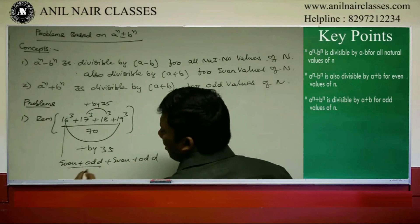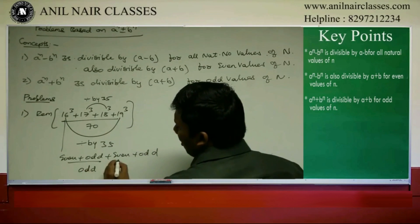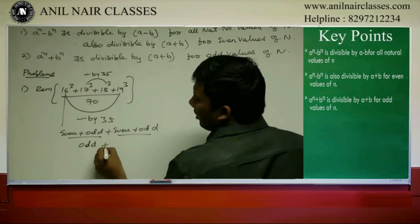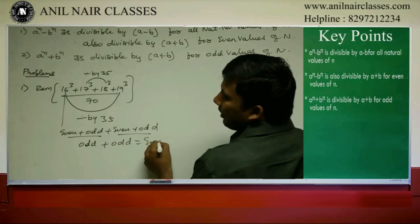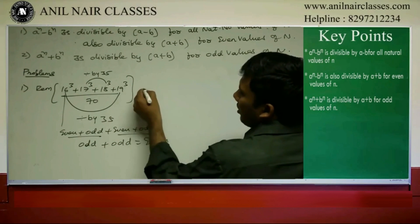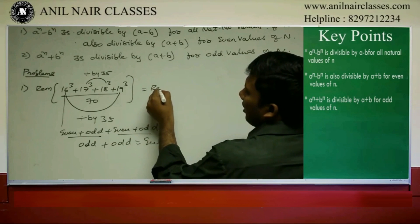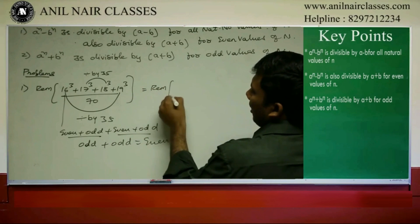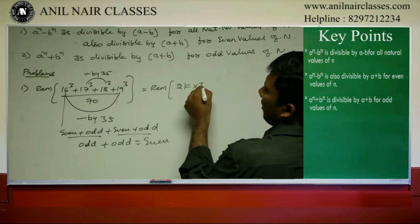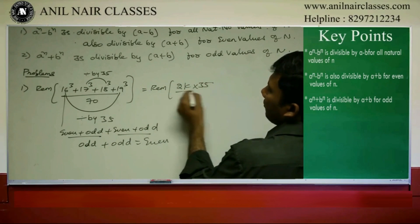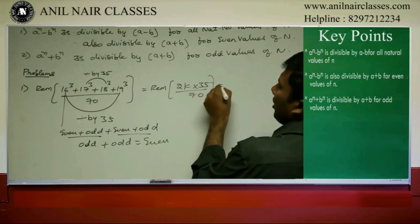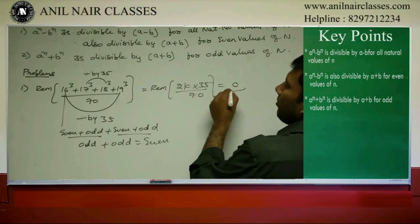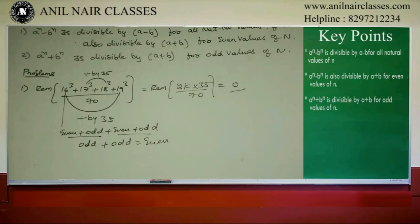Even plus odd is odd; even plus odd is odd. Odd plus odd is even. That means the numerator is an even number and divisible by 35, making it divisible by 70. So 70 into any number divided by 70 gives remainder 0.